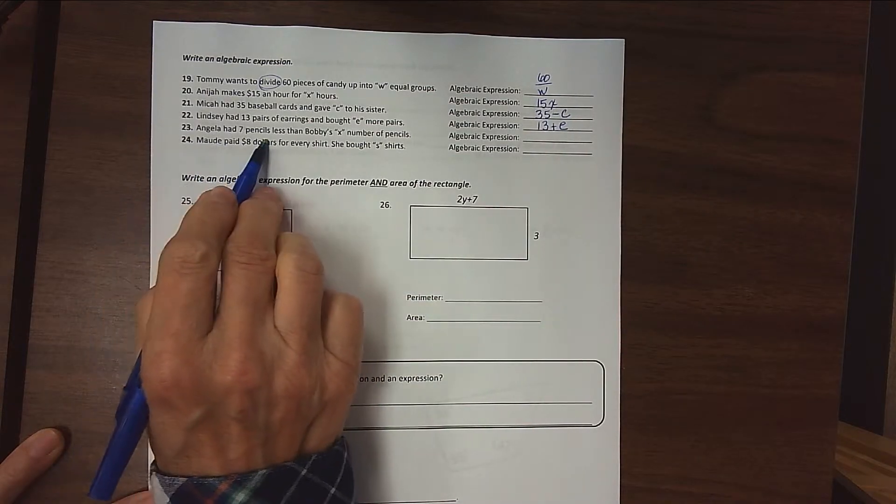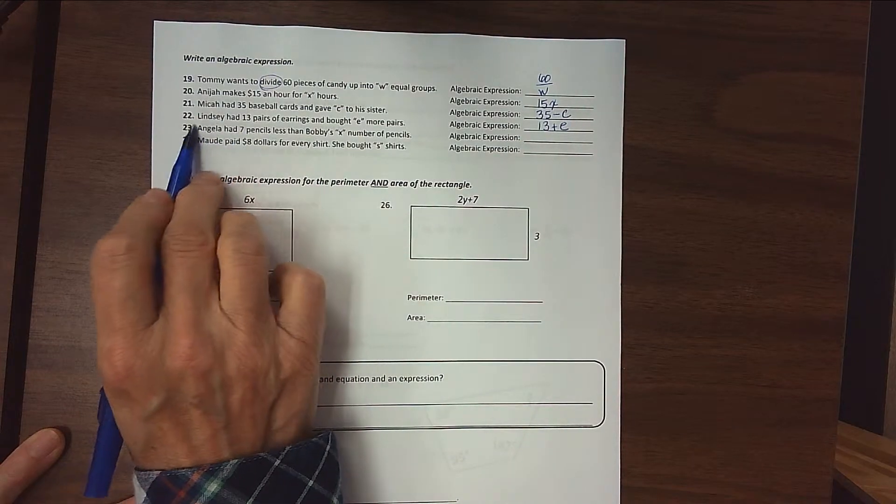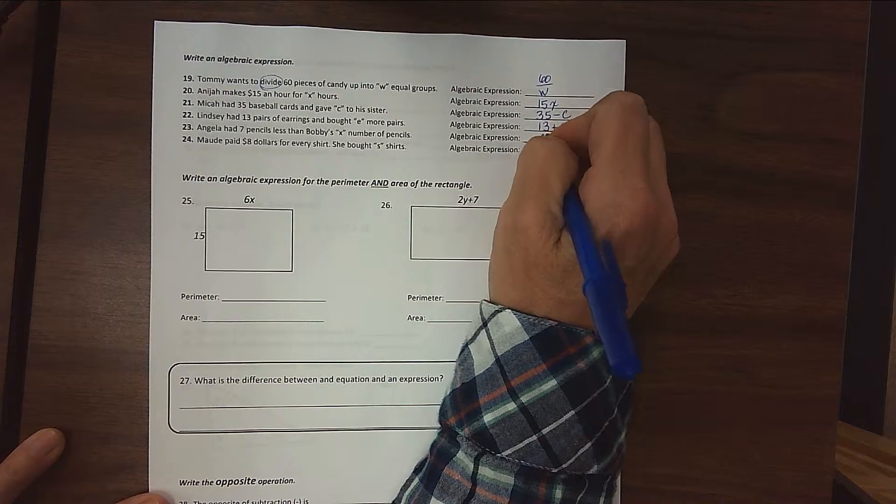Angela had 7 pencils less than Bobby's X number of pencils. So Angela has less, she has 7 less than Bobby's X, so we're going to take X minus 7.